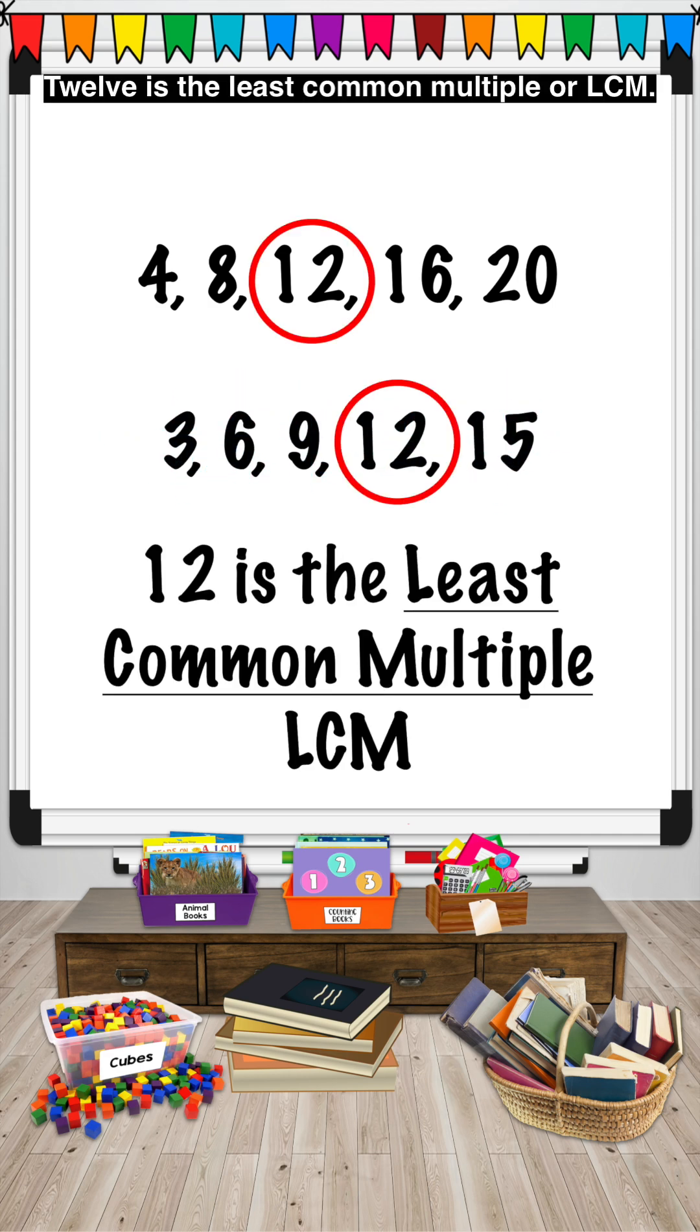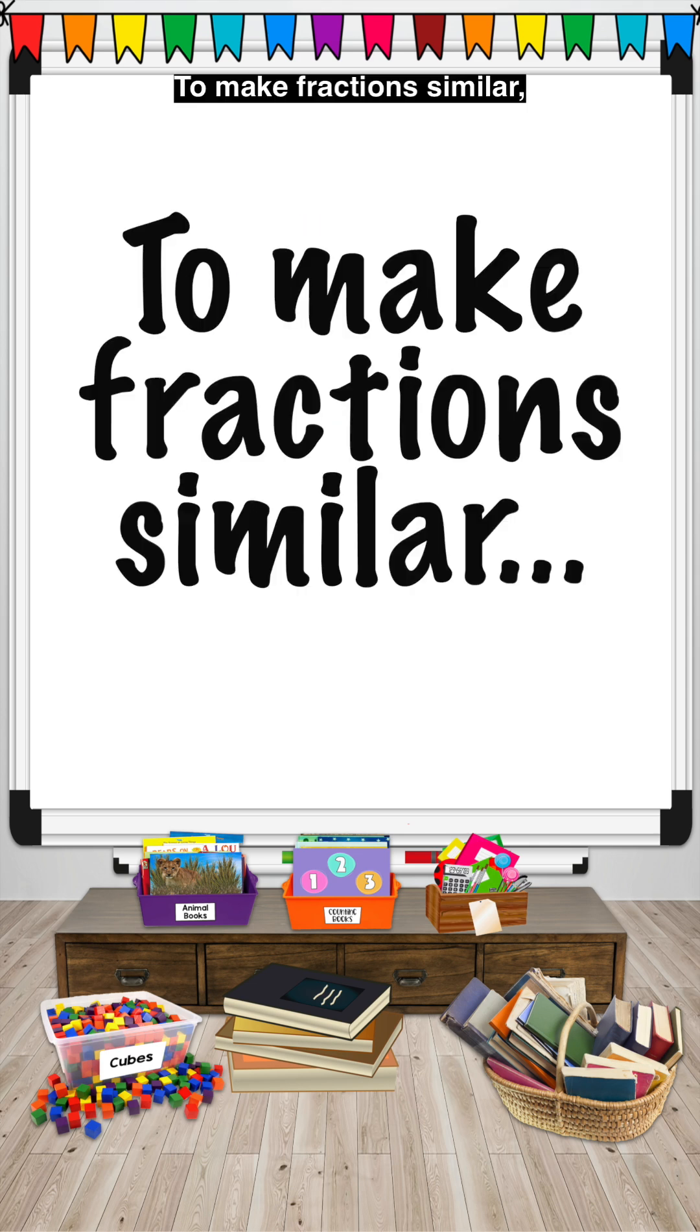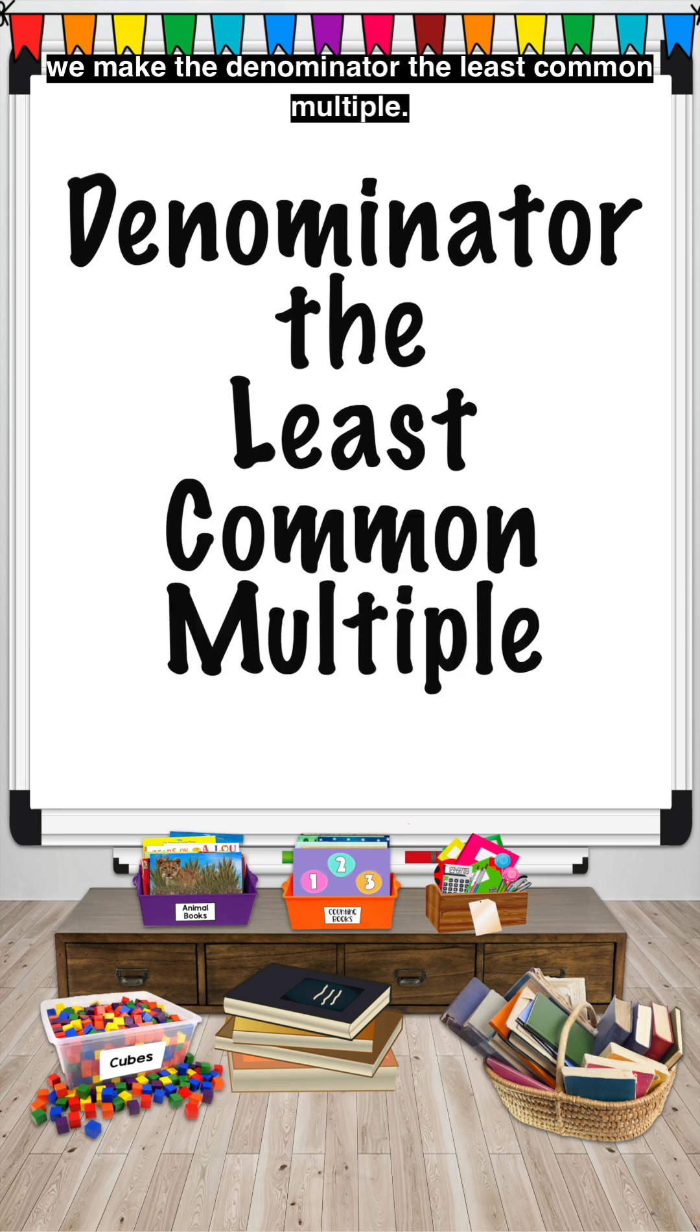Twelve is the least common multiple, or LCM. To make fractions similar, we make the denominator the least common multiple.